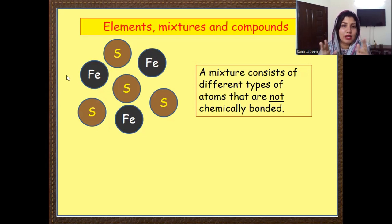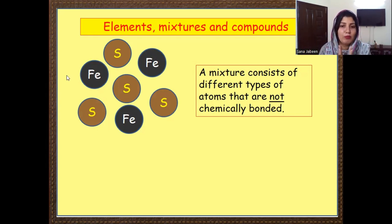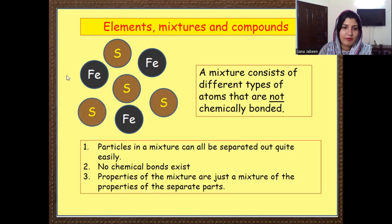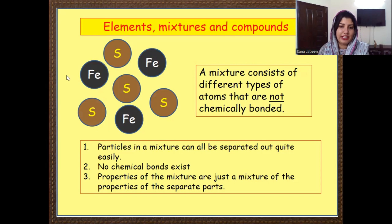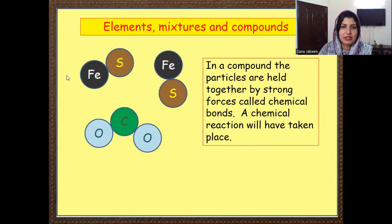So what is the difference between both of them? Mixtures are not chemically combined, whereas compounds have a chemical bond between them. Particles in a mixture can be separated easily using simple methods because there is no chemical bond, so we can separate them using techniques like filtration and crystallization.